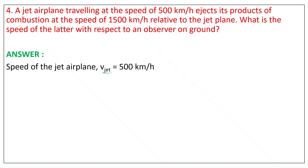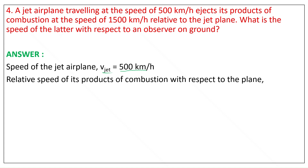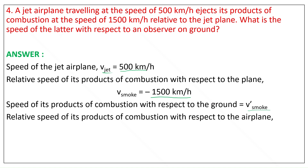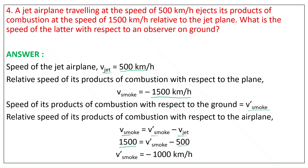Speed of the jet airplane, V_jet, is equal to 500 km/h. Relative speed of its products of combustion with respect to the plane, V_smoke, is equal to minus 1500 km/h, because the combusted smoke moves in the opposite direction. Speed of combustion products with respect to the ground: V_smoke = V_smoke_relative minus V_jet. Substituting: minus 1500 equals V_smoke minus 500, giving V_smoke equals minus 1000 km/h. The negative sign indicates the direction of combustion products is opposite to the direction of motion of the jet airplane.